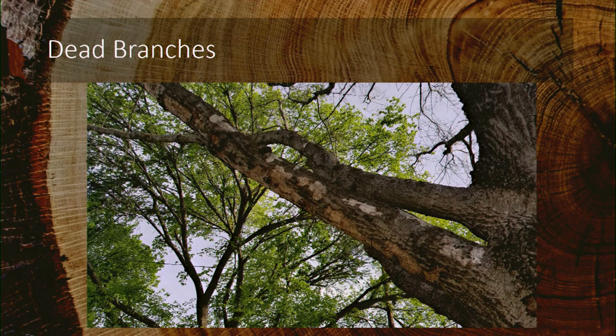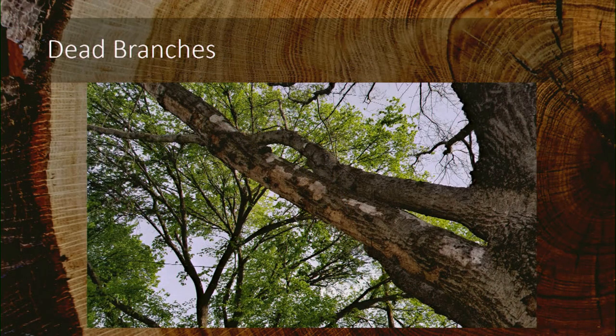Dead branches are another factor. Some species naturally produce dead branches potentially every year, and if they're not removed they accumulate within the canopy and become very dangerous — this requires a regular tree maintenance pruning program. You can identify dead branches in the growing season if they don't have leaves. When the tree would be naturally dormant, if twigs have no buds, the branch is likely dead. In this case there's also fungus growing on the bark, which was a sign the branch was dead.